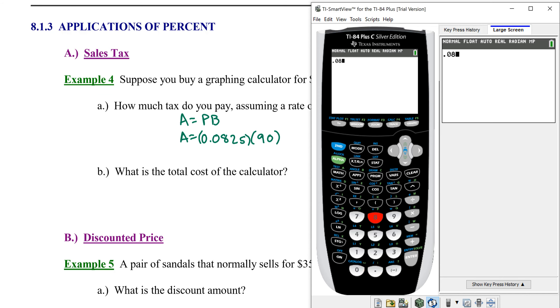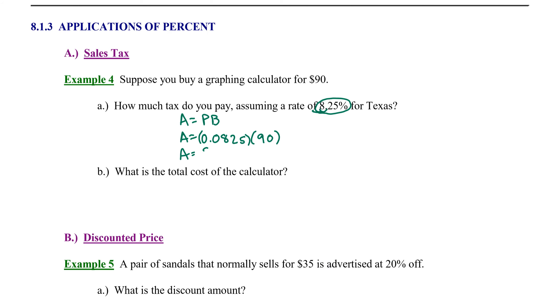Let's type it into our calculator. 0.0825 times 90 gives us 7.425. Since we're dealing with dollars and cents, we round to the nearest hundredth or two decimal places. We end up with $7.43. So we're going to pay $7.43 for sales tax.